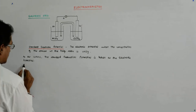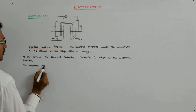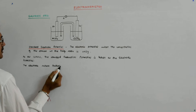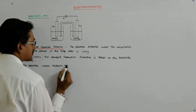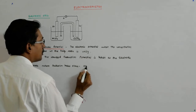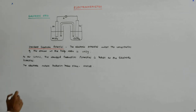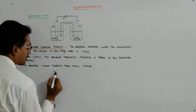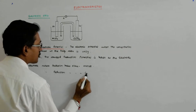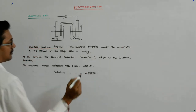The electrode where oxidation takes place is called the anode, and the electrode where reduction takes place is called the cathode.